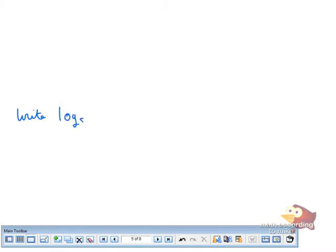Write log base 5 of x squared y to the 7th over z cubed in terms of log base 5 of x, log base 5 of y, and log base 5 of z.